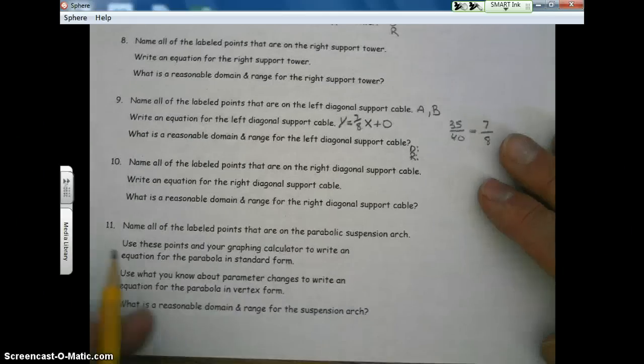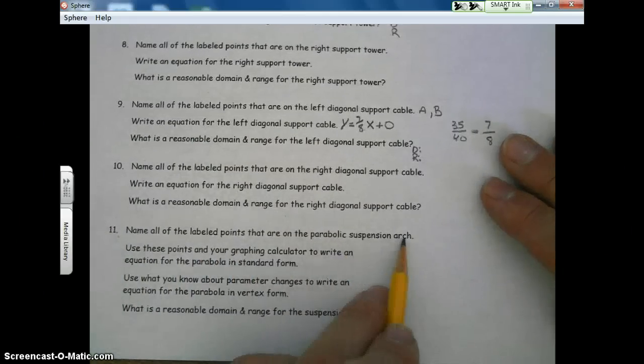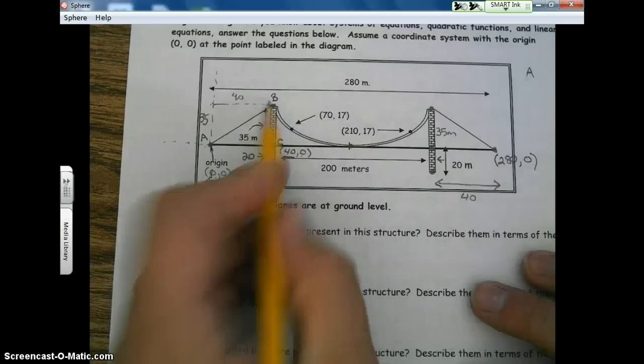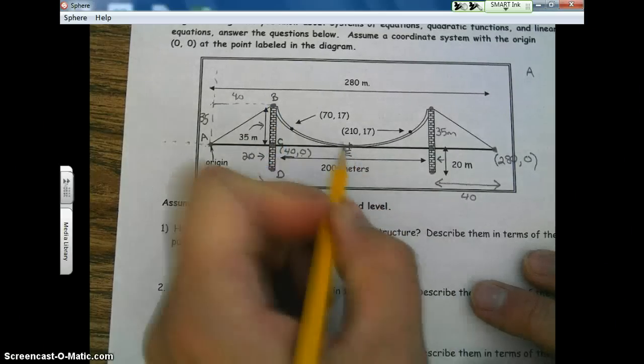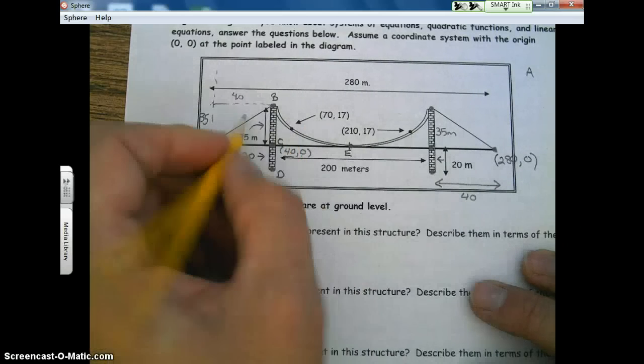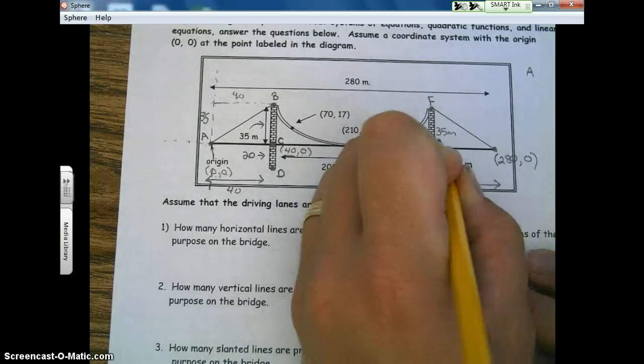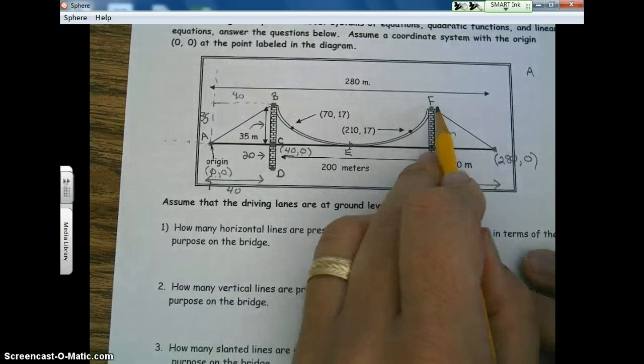Name all. Let's go down to 11. Name all the labeled points that are on the parabolic suspension arch. All right. We got B. Let's see. We got A, B, C, D. Let's go ahead and label that E. We could label these points as well, but I'm not going to. F and so on. So B, E, and F. B, E, and F.